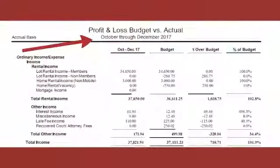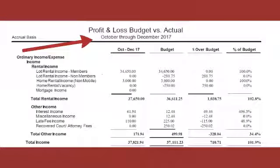Another thing you can see is this looks exactly the same, except it tells us by looking at the top that we're looking at October through December 2017 — October, November, December is a quarter. So this is our quarterly budget to actual for the final quarter of the year.